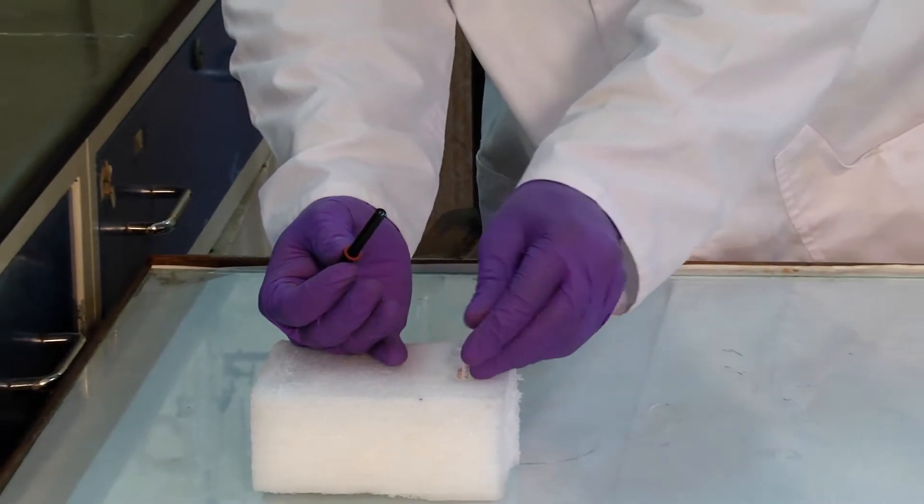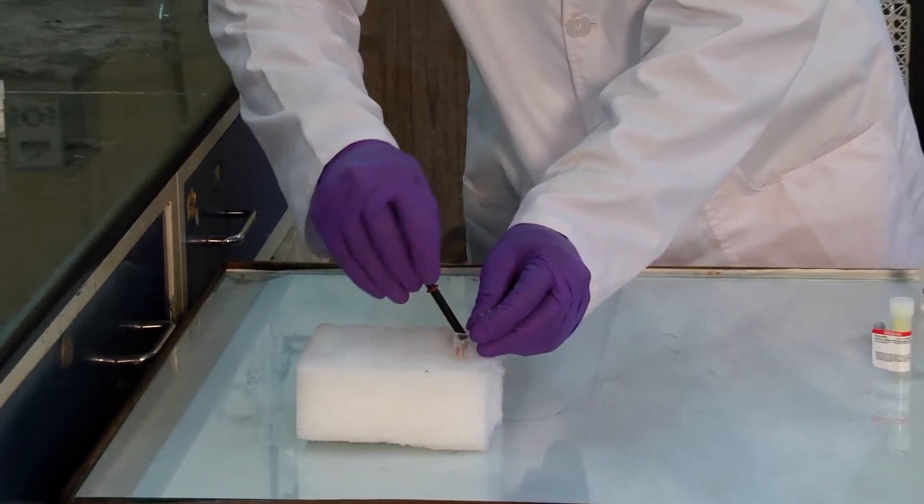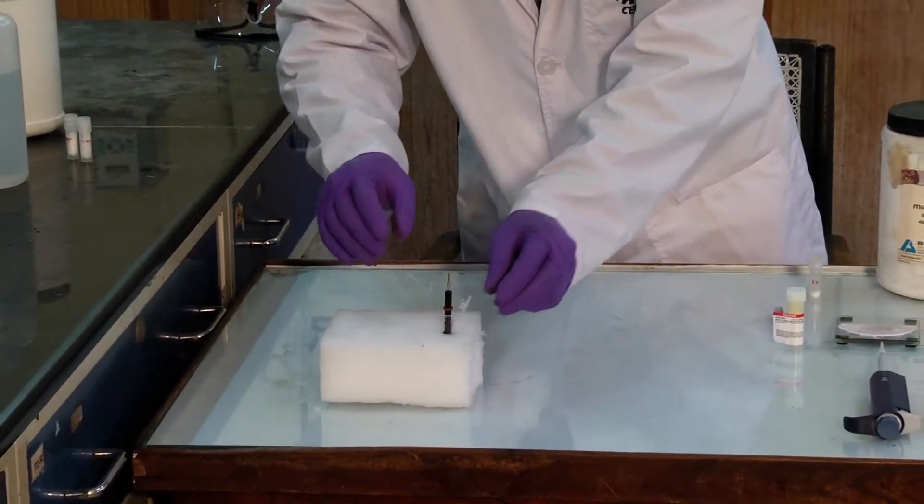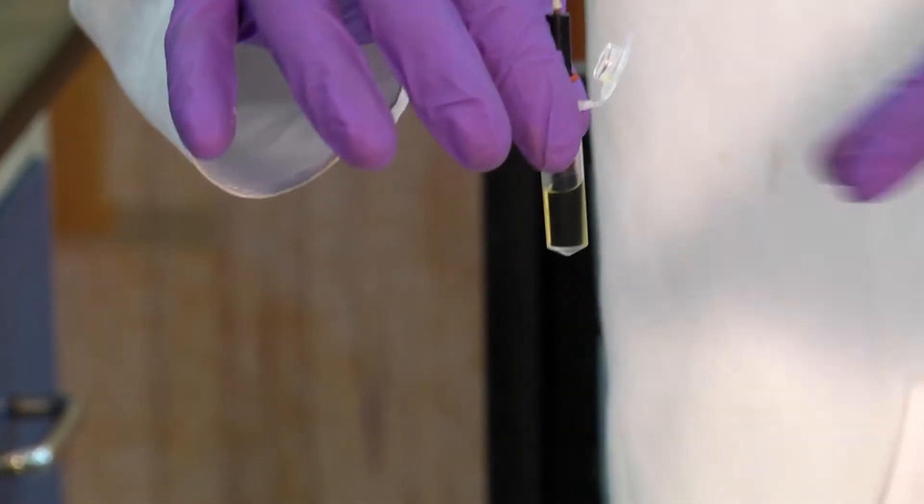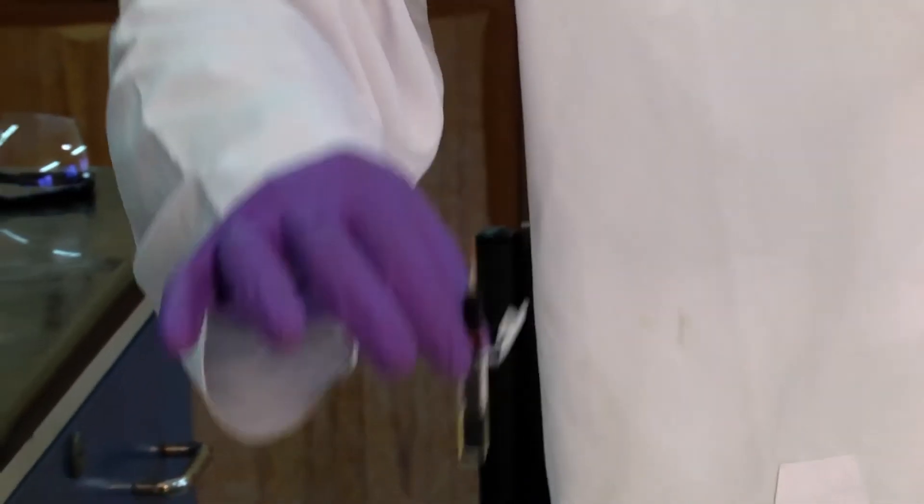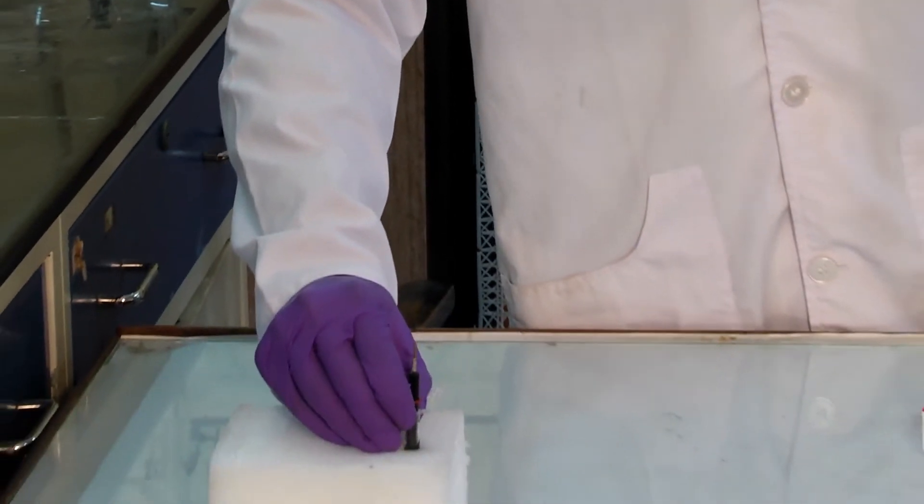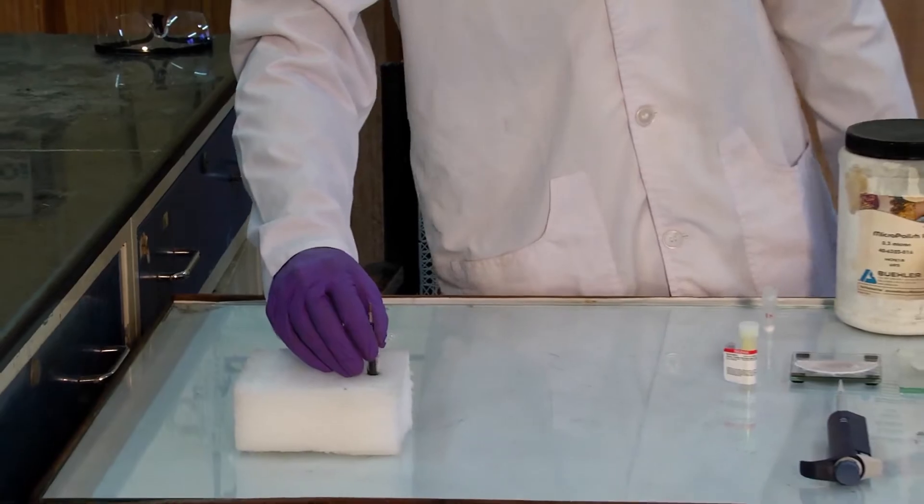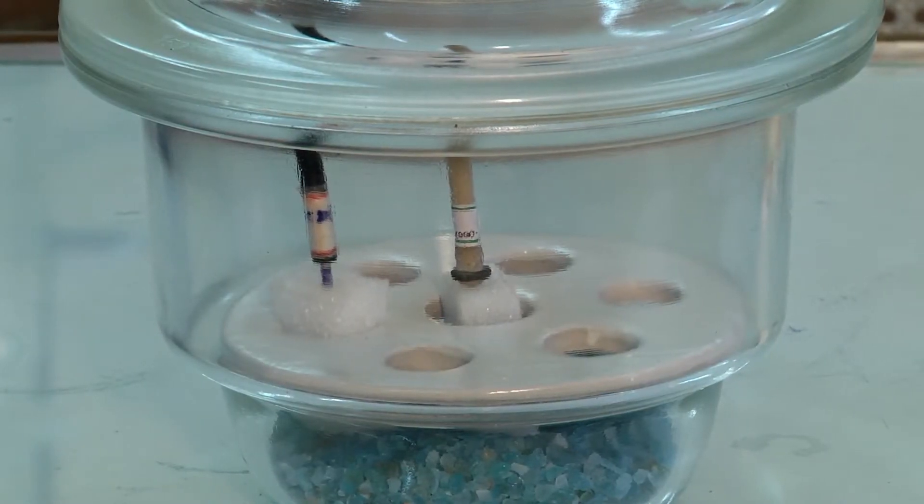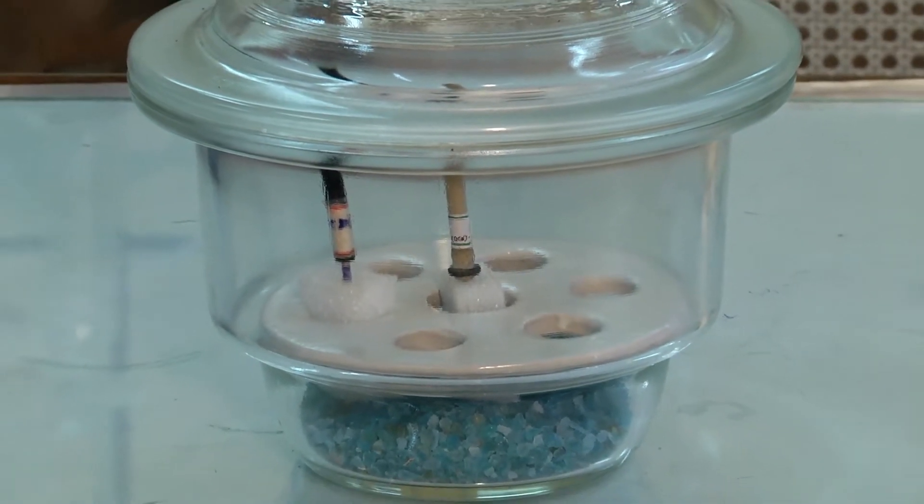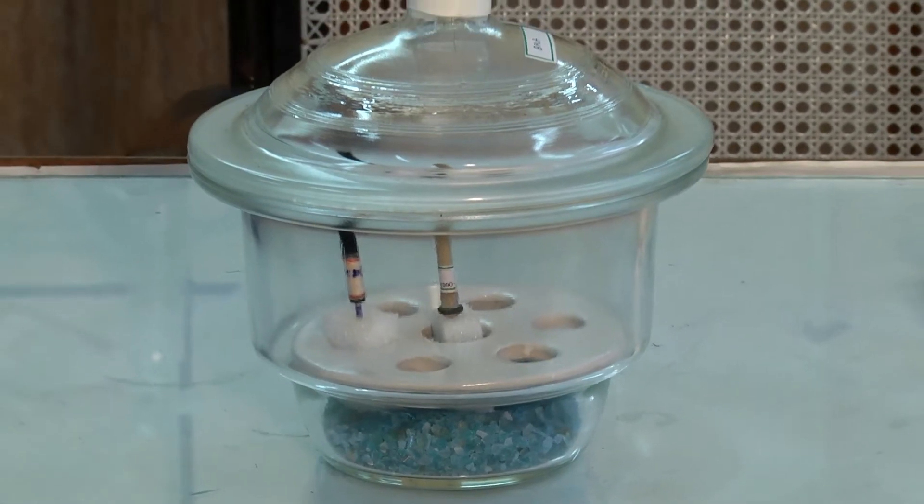Then this modified electrode is dipped in glucose oxidase enzyme solution for at least 6 hours. This process helps in the adsorption of enzyme on the multi-walled carbon nanotubes coated electrode. Finally, it is stored in the desiccator before analysis.